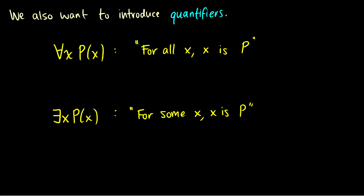But the more important thing predicate logic does is it gives us quantifiers — the upside-down A and the backwards E. The upside-down A is known as the universal quantifier. So '∀x, Px' is read as 'for all x, Px' — for example, 'for all x, x is happy'.